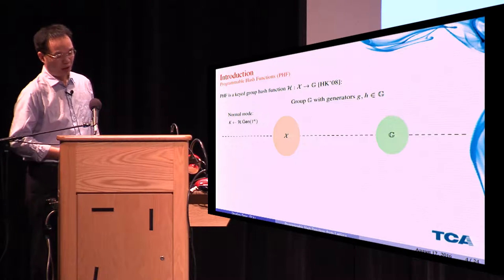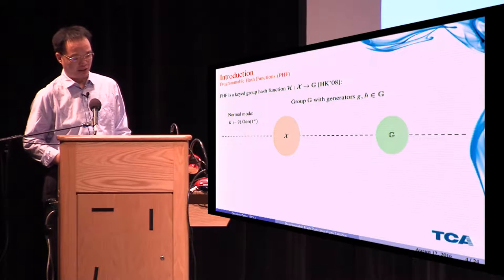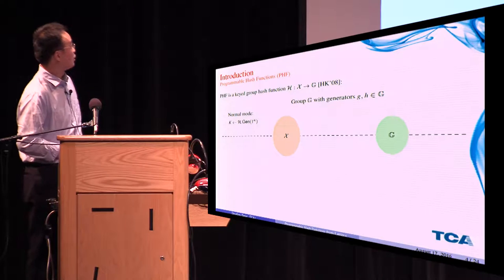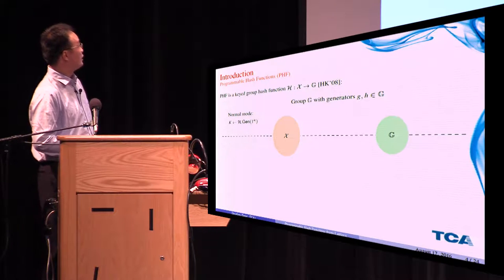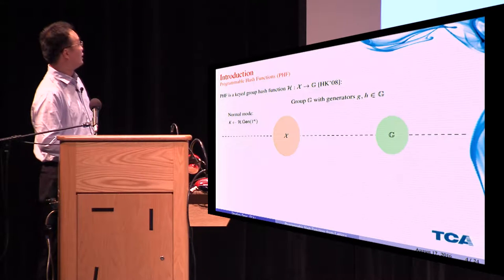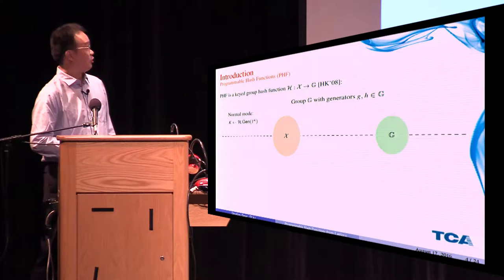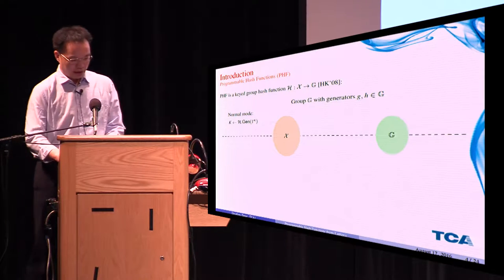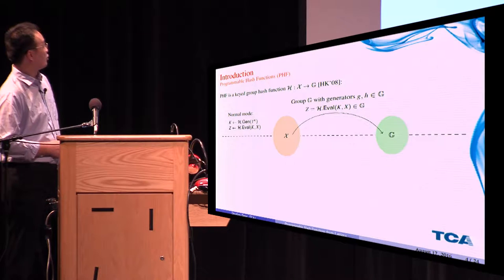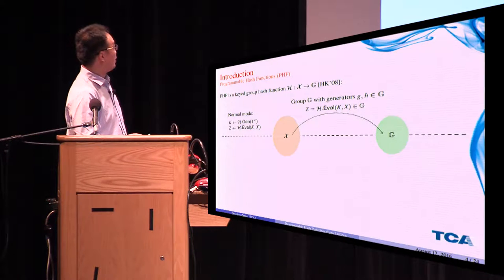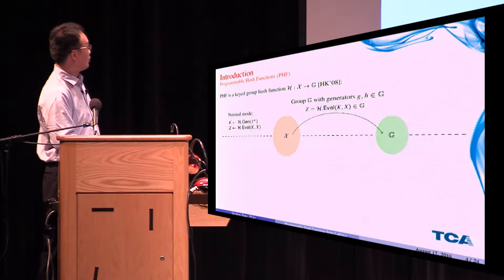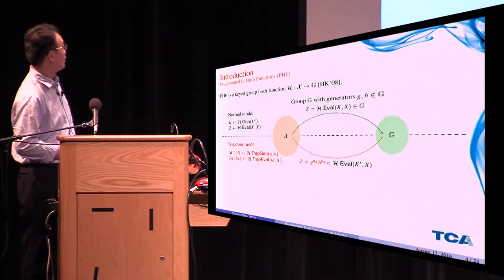First, programmable hash functions is a keyed group hash function which maps a set X to a group G. This hash function has two modes. The normal mode, where first there is an HG algorithm which generates a key K, and then with this key there is an HValue algorithm which maps an element from this set to an element from this group. This is the normal mode.